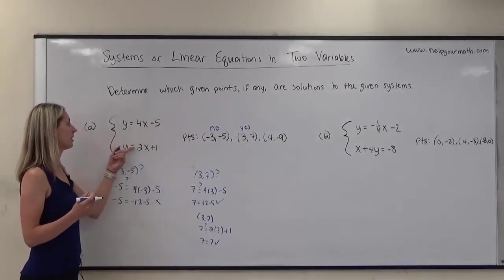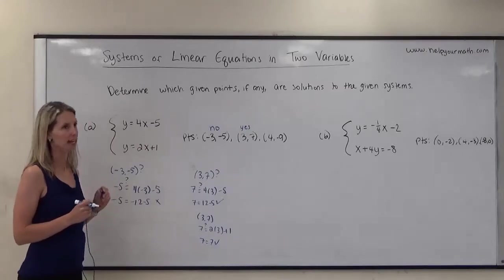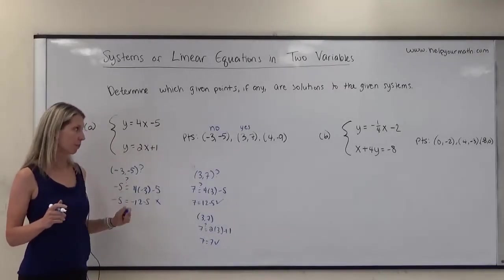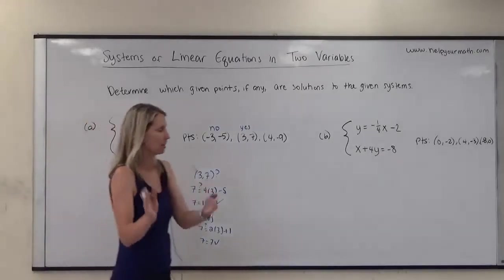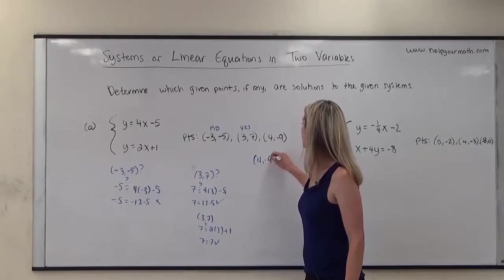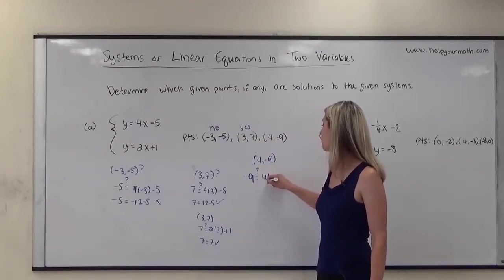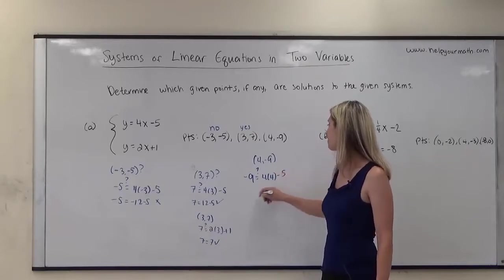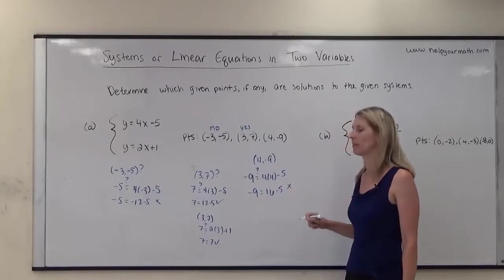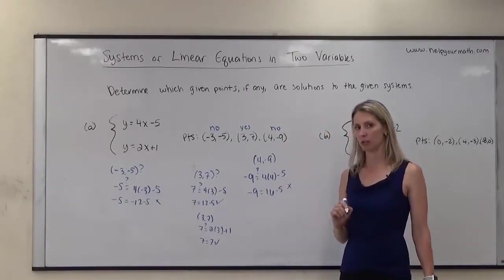Since the lines intersect in one point, that is the only place they will intersect, so we already know the answer should be no for 4, negative 9 — but let's make it official. Does negative 9 equal 4 times 4 minus 5? That's negative 9 equals 16 minus 5, which is 11. Negative 9 does not equal 11, so that confirms the answer is no.